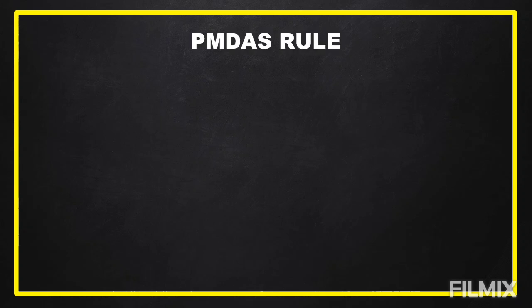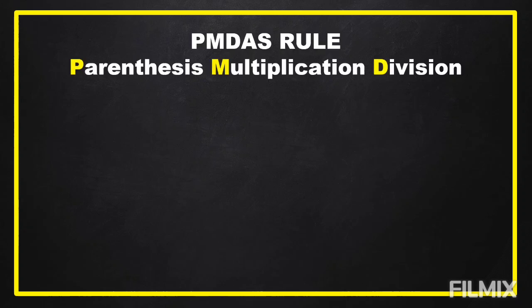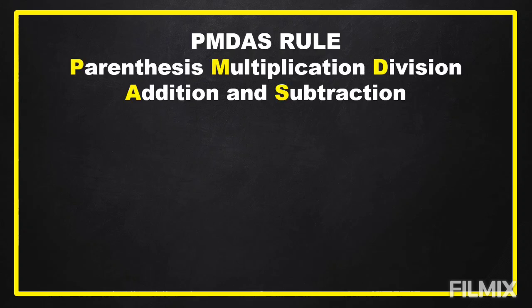Hello everyone, today we're going to discuss the order of operations in rule numbers. We're going to use PMDAS — this is for grade 5 mathematics, because when you are in grade 6 you are going to use PEMDAS, which includes an exponent. P stands for parentheses, M stands for multiplication, D stands for division, A stands for addition, and S stands for subtraction.